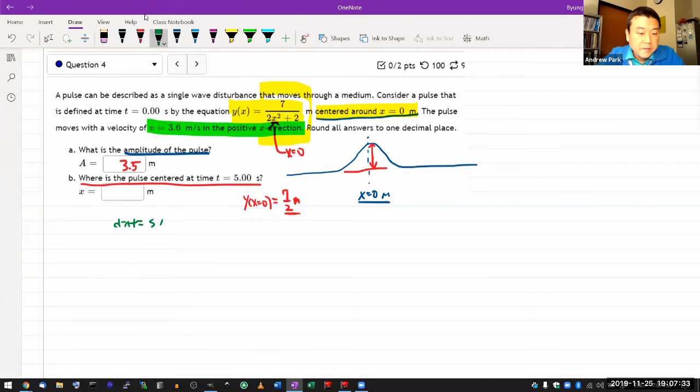Distance is speed times time, or speed of 3.6 meters per second times the time of five seconds, so this center here should have moved by a distance of I think 18 meters.